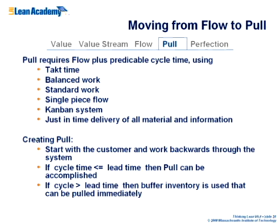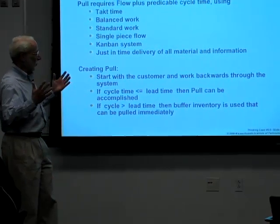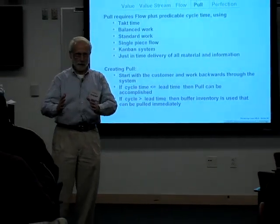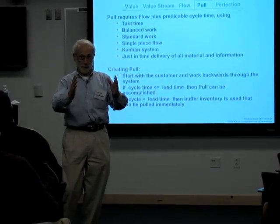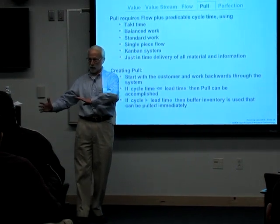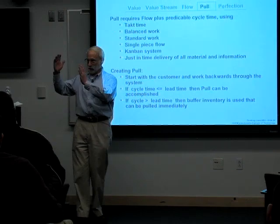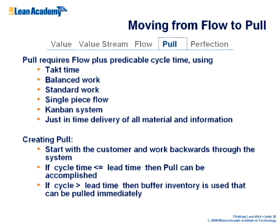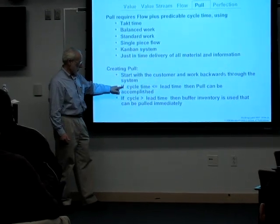Some tools for implementing pull include balanced work, standard work, single piece flow, Kanban, and just-in-time delivery. TAC time comes from a German word — it's like a drumbeat for the process. It's the available time divided by customer demand. For example, with the Apache helicopter, the Army wanted 144 per year — 12 per month — with 21 production days per month, that meant producing one every 1.75 days, and that Apache line moved exactly every 1.75 days. If your cycle time is less than lead time, you can meet customer demand; if greater, you need some inventory buffer.